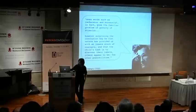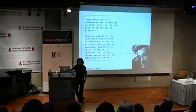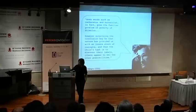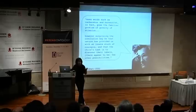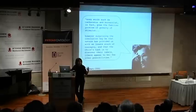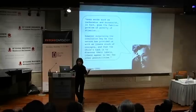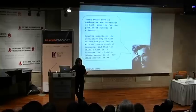Noam Chomsky, borrowing from Jerry Fodor, says: 'Even words such as carburetor and bureaucrat pose the familiar problem of poverty of the stimulus. However surprising the conclusion may be that nature has provided us with an innate stock of concepts and that the child's task is to discover their labels, there appear to be few other possibilities.' If it were the case that we were born with all human knowledge — past and future, including concepts like carburetor and bureaucrat — that would be extremely cool. But I don't think that's the case, so I think it's prudent to look for other possible solutions.